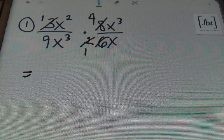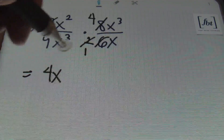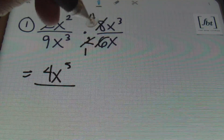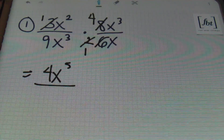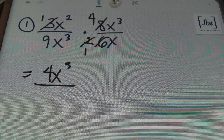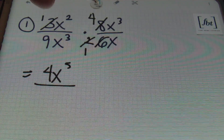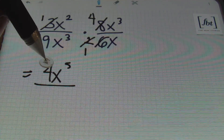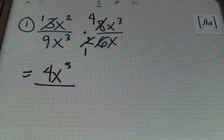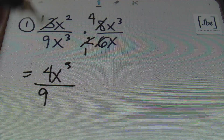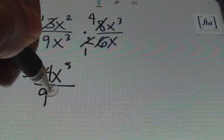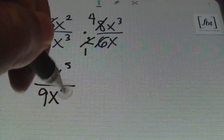Multiplying straight across, I'll end up with 4x to the 5th power. When multiplying like bases, you need to add the exponents. So x to the 2nd power times x to the 3rd power — you add 2 plus 3 to get x to the 5th power. Then in the denominator, 9 times 1 is still 9, and x to the 3rd power times x gives me x to the 4th power.